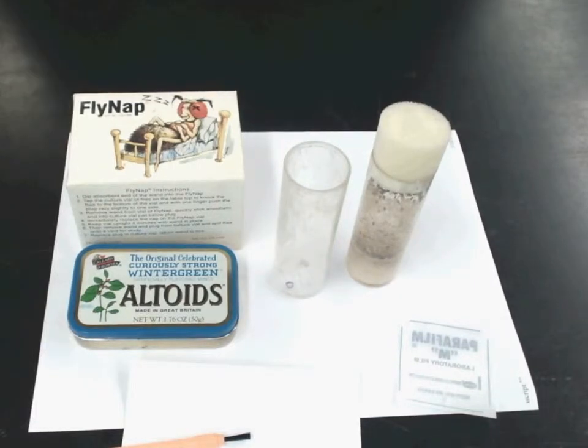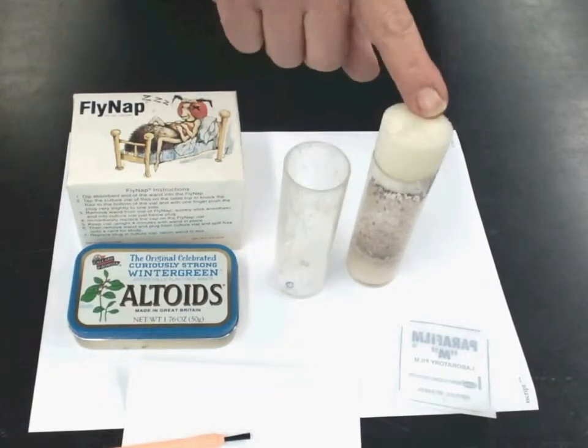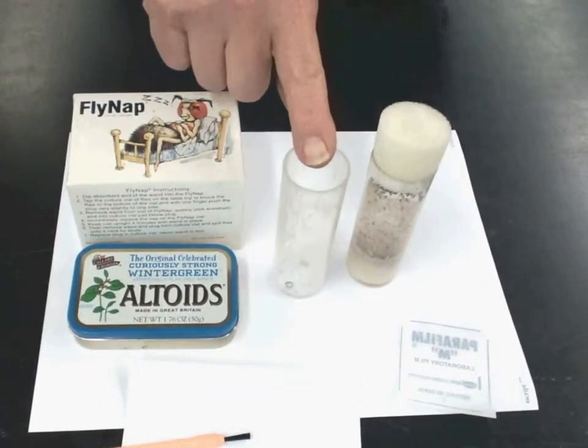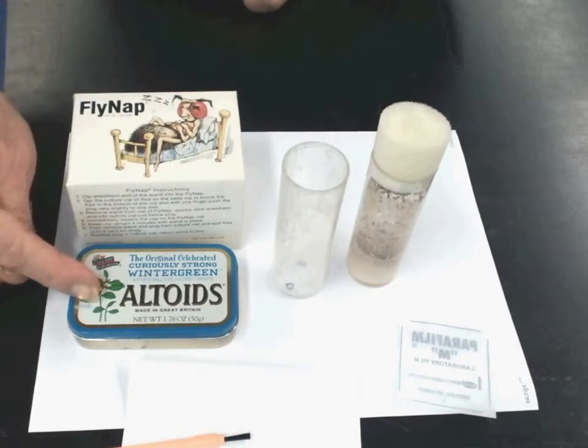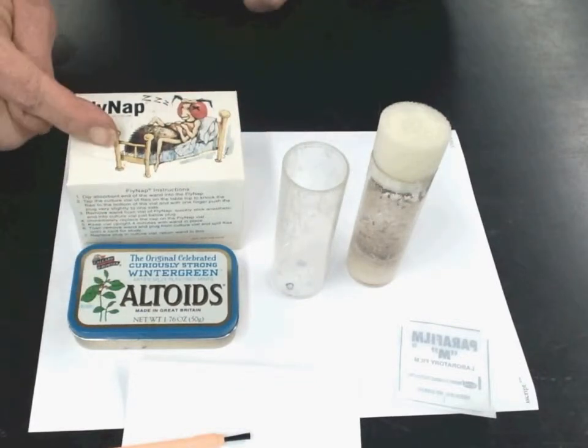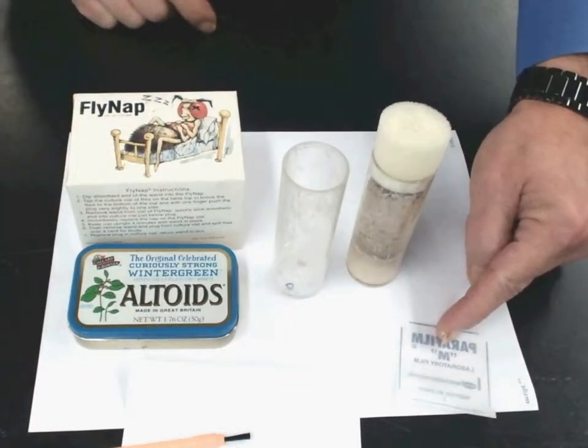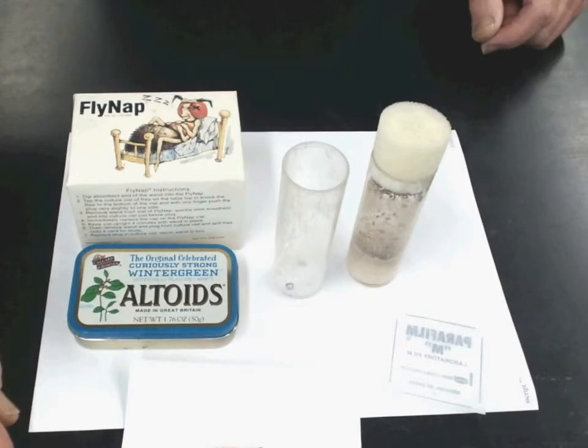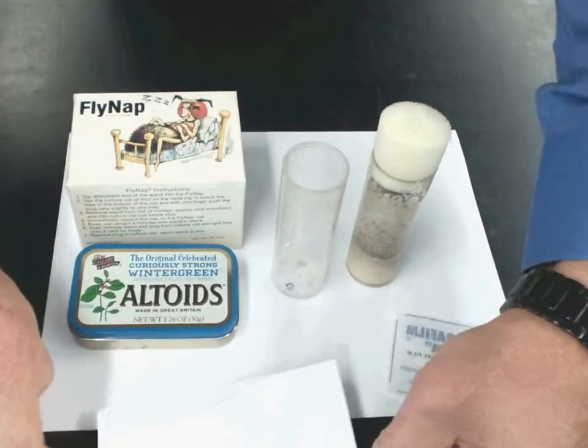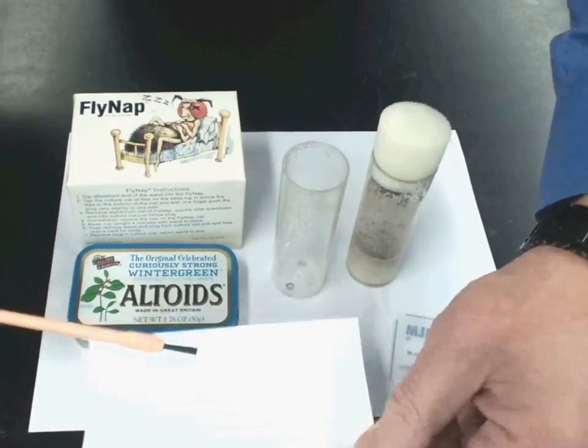So make sure you have everything ready to go and you're going to need your mother culture, an empty anesthetization vial, your box of wands, your fly nap, your one square of parafilm, and your fruit fly brush and 3x5 card.